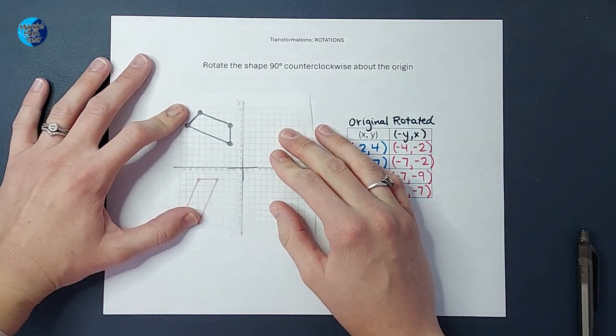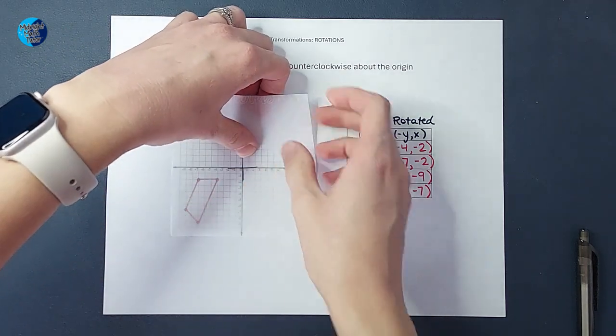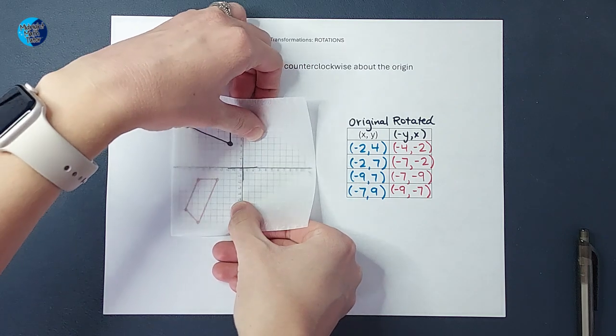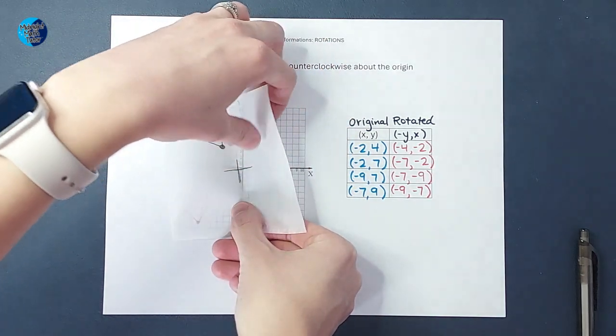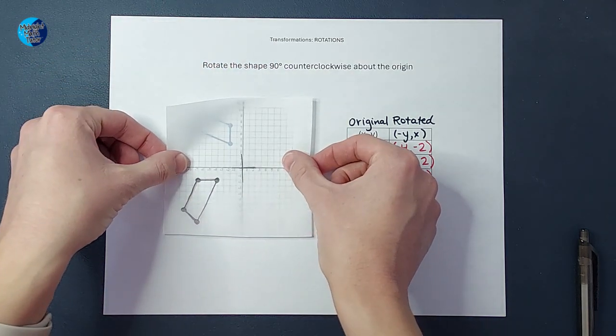Now I'm going to rotate it 90 degrees counterclockwise about the origin. So 90 degrees is going to be a quarter turn, right? So I'm going— oh my goodness, pretend like this was very smooth. All right, I'm going to turn it 90 degrees just like that.